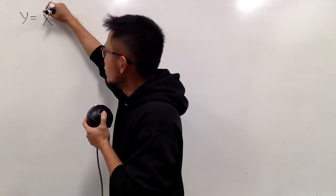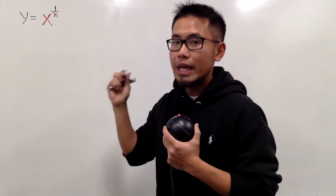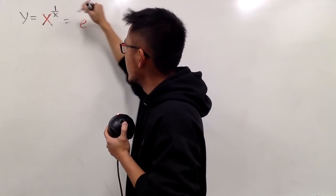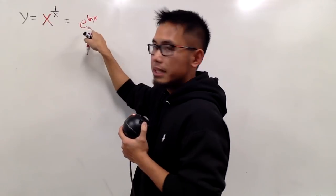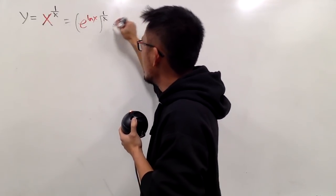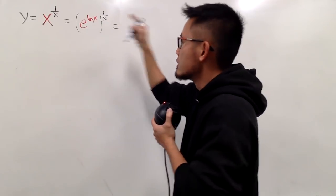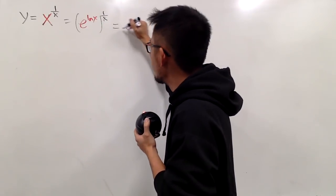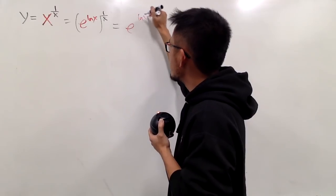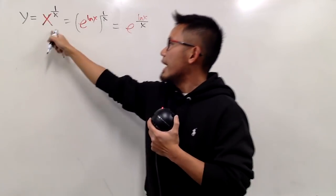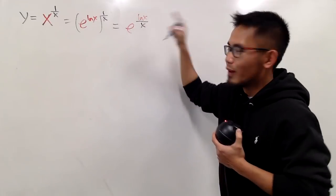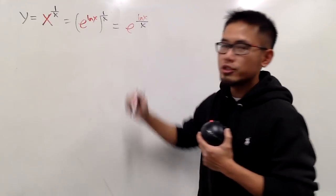First of all, notice that the base is equal to x. So let's look at x as e to the ln x power, because whenever you want to work with the exponential, you want to have base e. Then raise that to the 1 over x power, and now we can just multiply the powers. So we will have e to the ln x times 1 over x, which we can write as ln x over x. So x to the 1 over x is the same as e to the ln x over x. And now we'll look at this expression and differentiate.